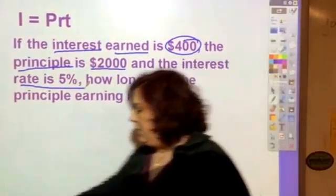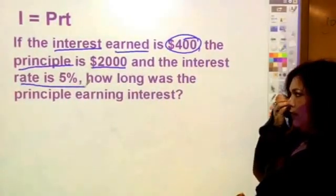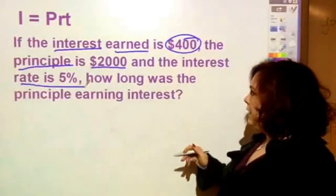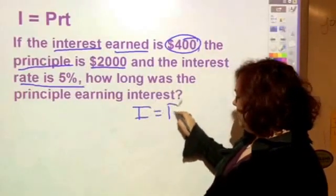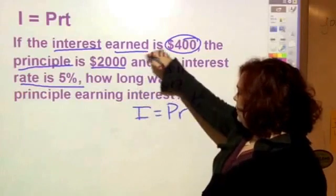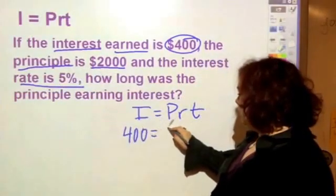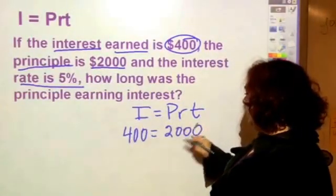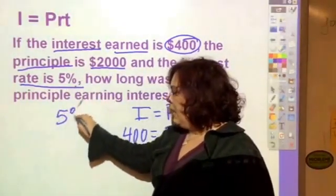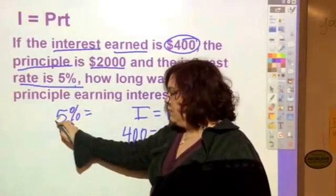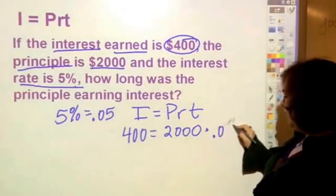I'm going to use a calculator. I'm going to plug it into my equation I = Prt. The interest earned is $400, the principal is $2000, and remember principal is what we start out with. The rate is 5%, which as a decimal is 0.05.